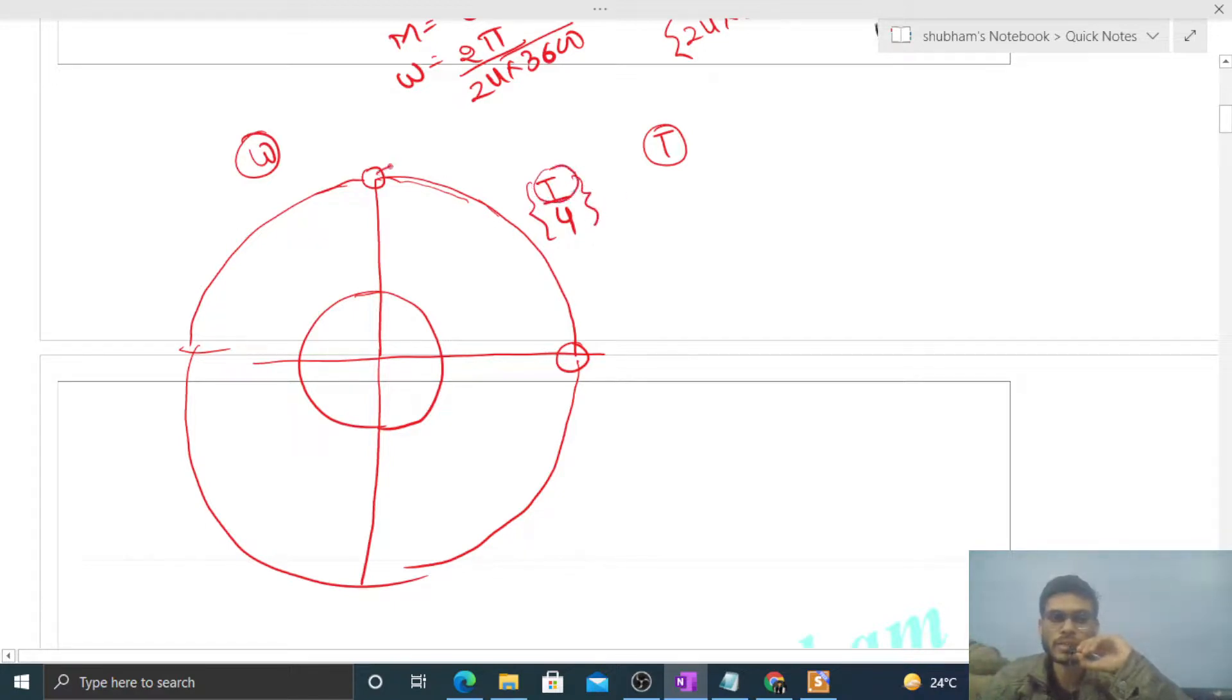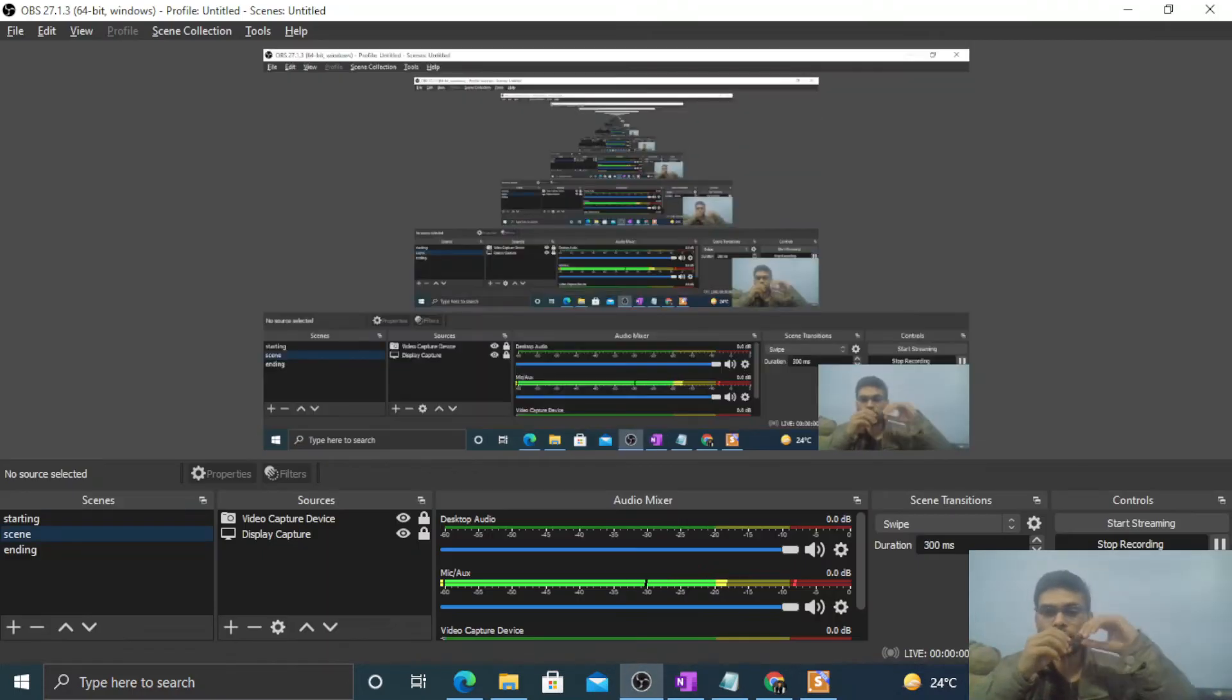Now what will be the time period for this satellite? That will be same as the time period of the Earth, because time period is nothing but 2π by omega. If omega is same for both, then time period is also same for both. And time period for Earth is 24 hours, so T by 4 will be 6 hours. So I think you have understood. Let me know if you still have any confusion, we can discuss further. Okay, let's keep working hard. Best of luck, bye!